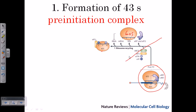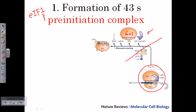Starting from this point, we have the 40S subunit, initiation factors, and elongation factors — mainly initiation factors. The eukaryotic initiation factors are called eIFs — eukaryotic initiation factors — and can be named eIF-a, b, c, d, or eIF-1, 2, 3, and so on. At the very beginning, eIF3 comes in and binds to the E site of the 40S subunit to block it, just like in prokaryotes, to prevent the 60S complex from pairing prematurely.